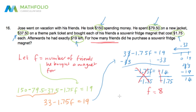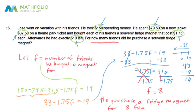F equals 8, which is great. We look back at the question — for how many friends did he purchase a souvenir fridge magnet — and write the answer as a sentence: he purchased a fridge magnet for 8 friends. Just saying 'F equals 8' isn't enough because we don't know the units. We should always go back, check the question, and write a full answer in a sentence.